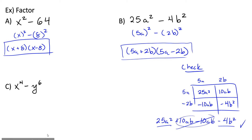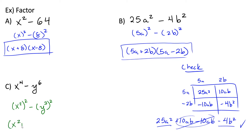Now let's look at example c. You might wonder why there are powers of 4 and 6, but these are actually squares — they just look different. Remembering our rules for exponents, when you raise an exponent to a higher power you multiply the powers, and these are both even powers. We can rewrite x to the fourth as x squared, squared, and y to the sixth as y cubed, squared. Now we have x squared squared minus y cubed squared, so we do have the difference of two squares, and we can factor this into x squared plus y cubed times x squared minus y cubed.